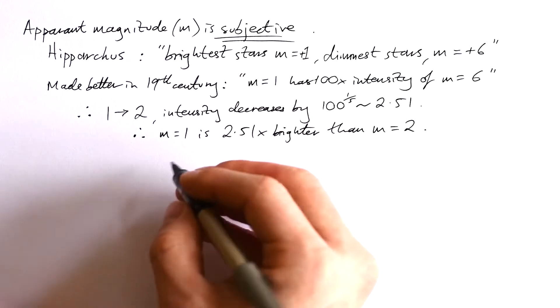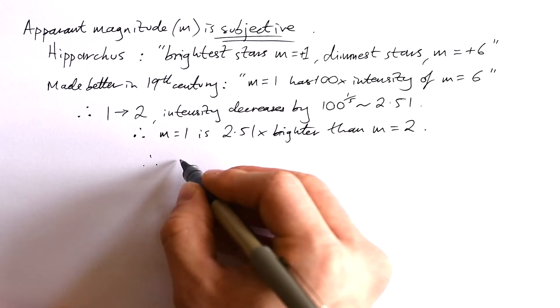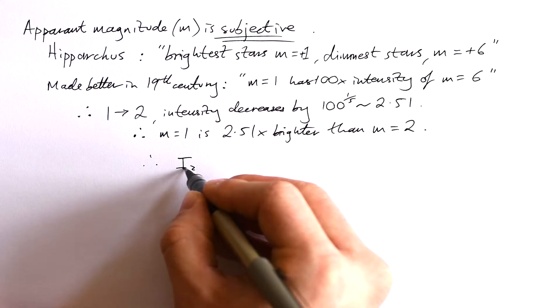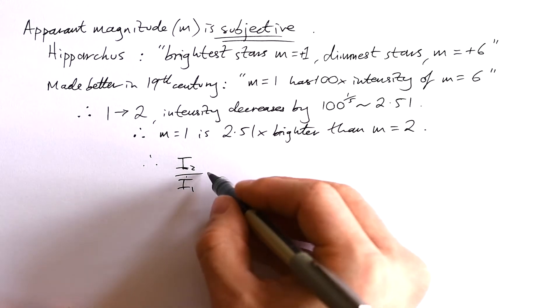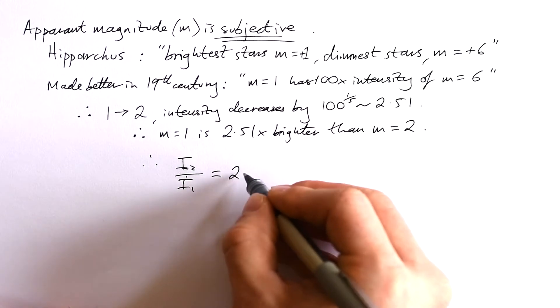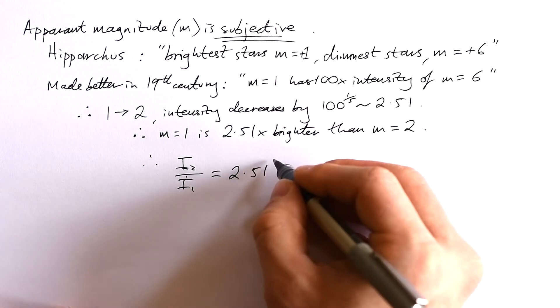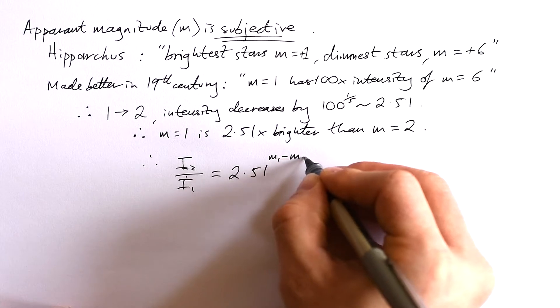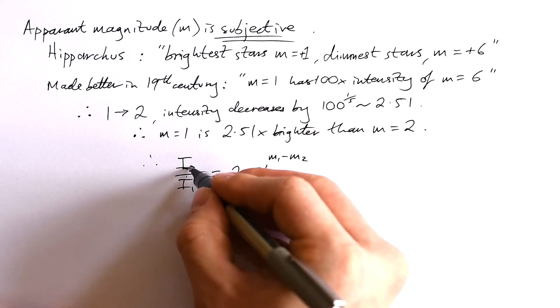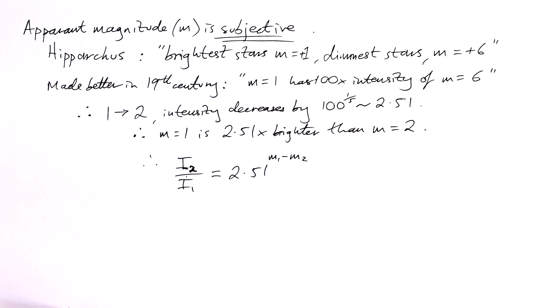Therefore, we have a logarithmic scale. The ratio of intensities of two stars is roughly equal to 2.51 to the power of the difference in their magnitudes. Just be careful which way round you put this.